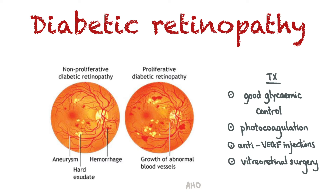Diabetic retinopathy can be prevented and its progression slowed by keeping the HbA1c below 53 millimoles per mole and blood pressure below 130 over 80. In the UK, any patient with diabetes aged 12 and over will be invited for diabetic retinopathy screening annually.